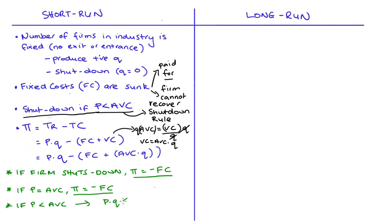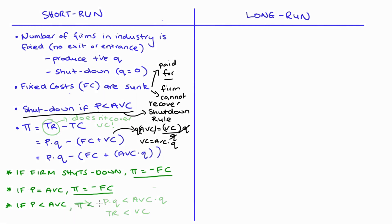Now let's consider the case where price is less than average variable cost (P < AVC). Multiplying both sides by Q: P × Q < AVC × Q, meaning total revenue is less than variable costs. If price is less than AVC, total revenue doesn't even cover the variable cost component — and we still have the sunk fixed costs on top of that. So profit will be something less than negative fixed costs (< −FC).